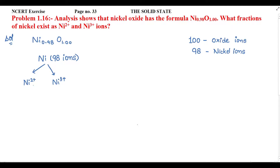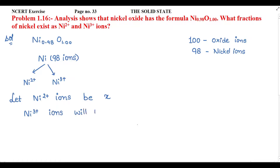We have 98 nickel ions total, and among these 98 nickel ions there are Ni²⁺ ions and Ni³⁺ ions. We need to find how many Ni²⁺ and Ni³⁺ ions are present. Let Ni²⁺ ions be x. So Ni³⁺ positive ions will be 98 minus x, since there are 98 total ions.